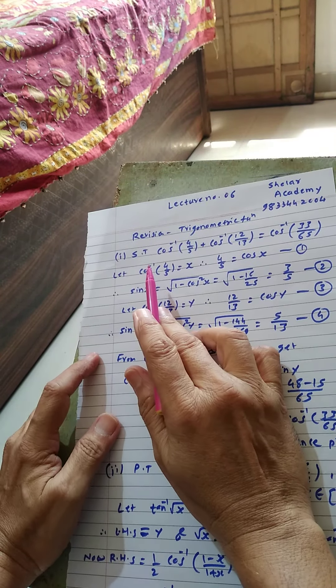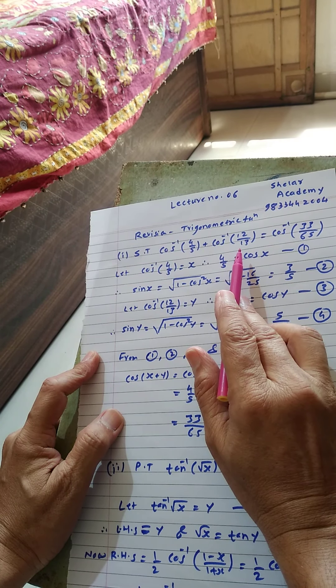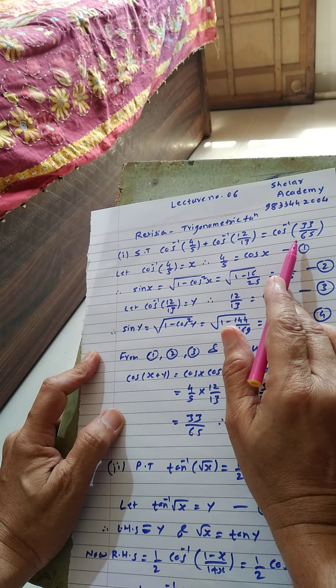First question: show that cos inverse 4 by 5 plus cos inverse 12 by 13 is equal to cos inverse 33 by 65. For such problem, 4 marks.